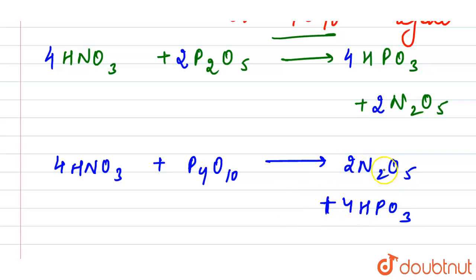Here this is our metaphosphoric acid. It generally exists in polymeric form, but its name is metaphosphoric acid.